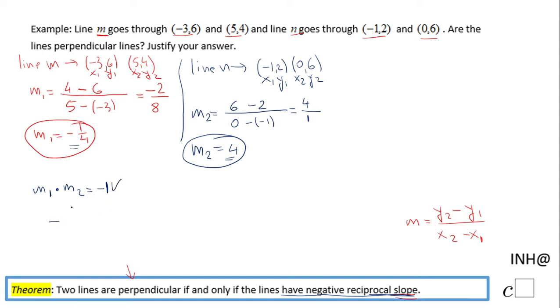Another way is to start from one of the slopes you found, for example negative 1 over 4, flip it—see how I flip it—and then change the sign. And you notice I get 4 over 1, which is nothing else than this 4. In this moment I know these two slopes are negative reciprocal.